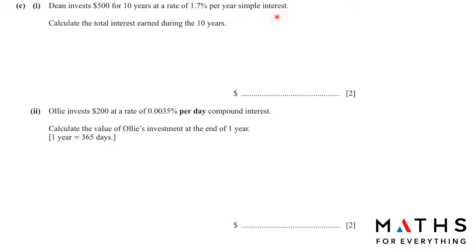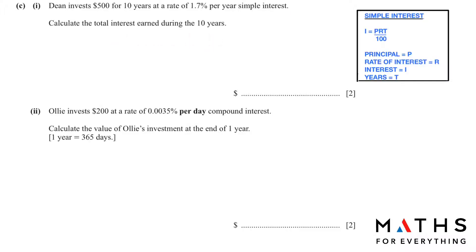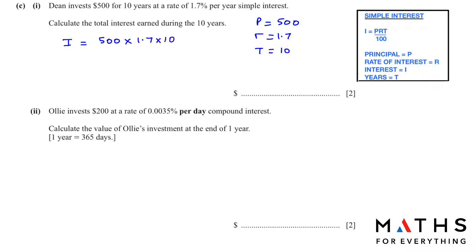Dean invests $500 for 10 years at a rate of 1.7% per year simple interest. Calculate the total interest earned during the 10 years. We use the formula I = PRT over 100. P is the principal, which is 500; R is the rate of interest, 1.7%; and T is the number of years, which is 10. The answer is $85.